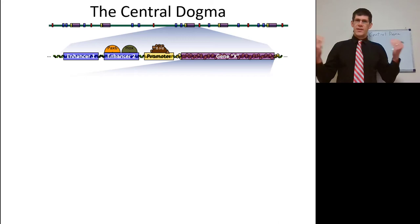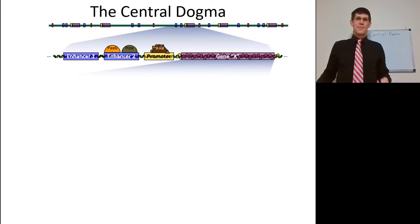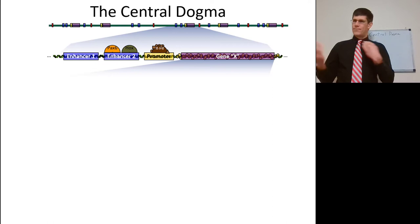A gene is much more complicated than just a strand of DNA that codes for a protein. Mutations in enhancers, mutations in the promoter, or mutations in the gene can all cause variation. That's the central part of the central dogma when it comes to how genes are inherited and how mutations occur.